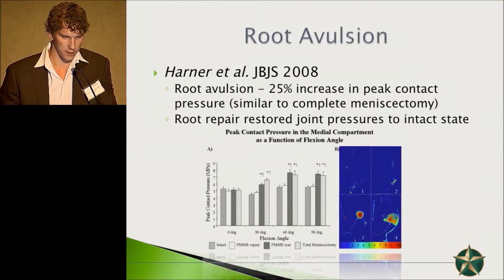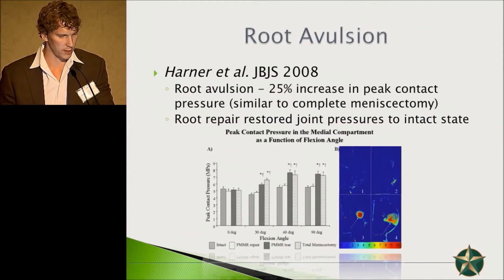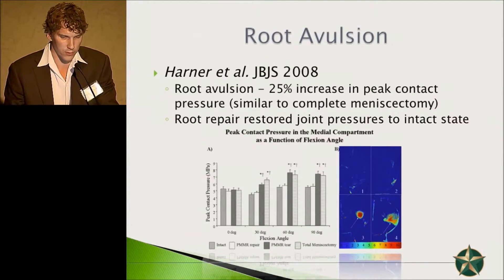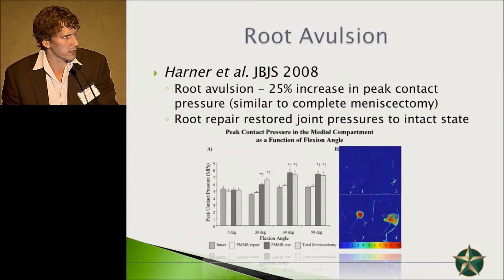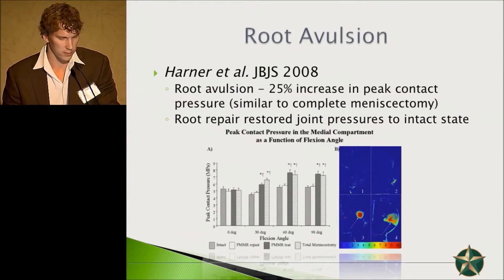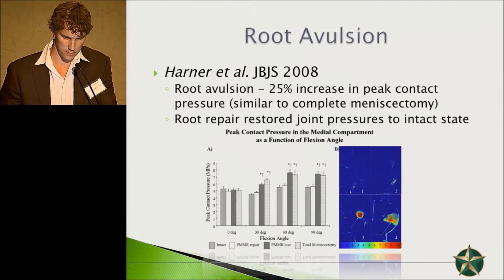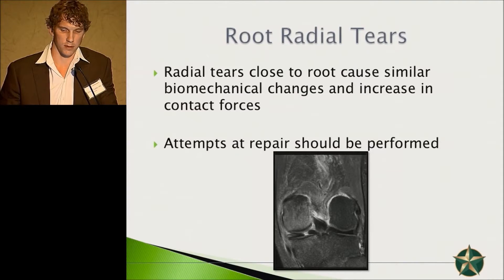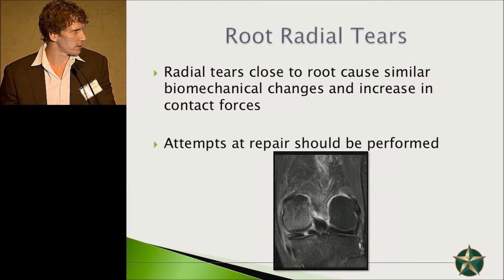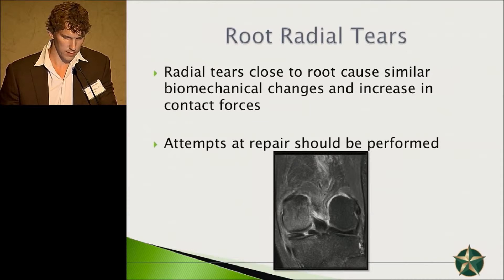A study in JBJS in 2008 looked at a complete root avulsion and found a 25% increase in peak contact pressure, which is very similar to a complete meniscectomy. Root repair restored joint pressures to the intact state. Radial tears close to the root certainly cause a similar biomechanical change and increase in contact forces, and attempts at repair should definitely be performed.